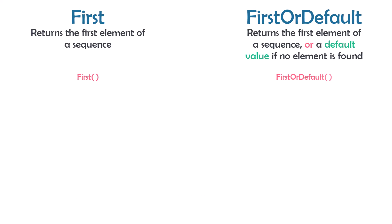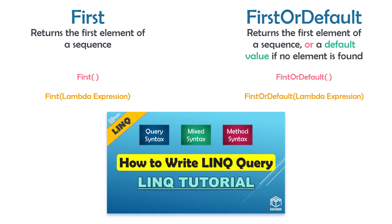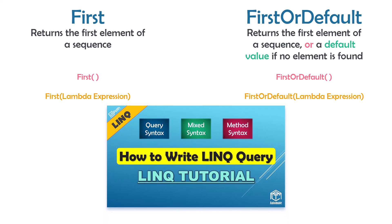We can also use both operators in another way. The first way was using the operator with empty brackets. The second way is using the operator with a lambda expression within the brackets, meaning we can set a condition to filter the elements before getting the first element. If you don't know what a lambda expression is and how to write one, please check the following video where I explained it in detail.